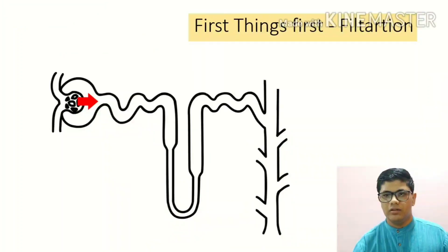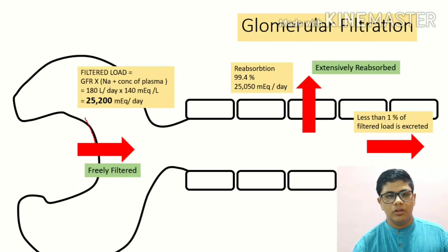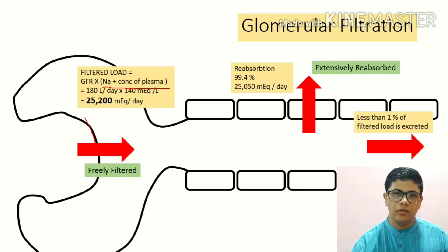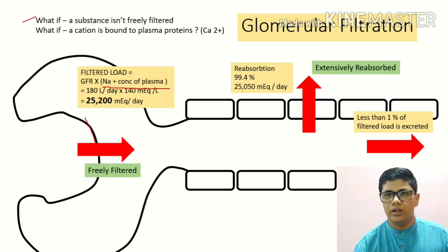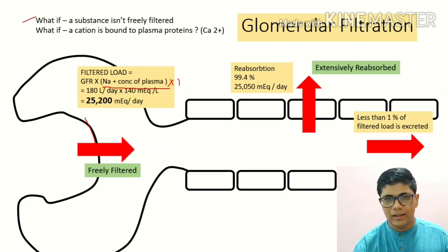First, let us look at filtration. Sodium is filtered freely across the glomerular capillaries. The significance of this free filtration is that the sodium concentration of the ultrafiltrate is the same as that of plasma. Therefore, calculation of filtered load is simple — it is just the GFR multiplied by plasma sodium concentration. If sodium were not freely filtered, we would need to consider a sieving coefficient, but since it is freely filtered, the sieving coefficient is literally 1.